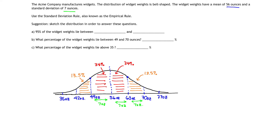We also have the farther outer bands, where it starts getting small. Those two outer bands — the ones just beyond two standard deviations — are each worth 2.35% of the total area. And then finally, the tiny bands on the way outside, those represent 0.15% of the population, or 0.15% of the area under the probability density function.